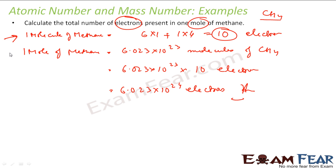One mole of methane has 6.023×10²³ molecules, and one molecule of methane has 10 electrons. So the total number of electrons in one mole of methane is those many molecules multiplied by 10 electrons.